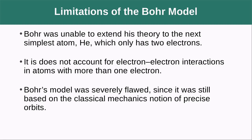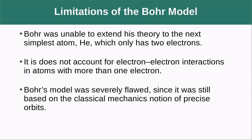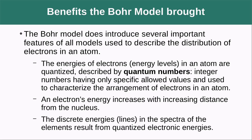So Bohr's model has some limitations. It was unable to extend his theory to the next simplest atom, helium. So it only works for hydrogen. It does not account for electron-electron interactions. It can't handle those types of interactions. And it was still based on classical mechanics notion of precise orbits. And we'll see exactly what precise orbits means in a little bit here.